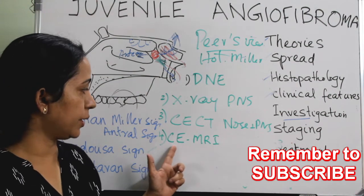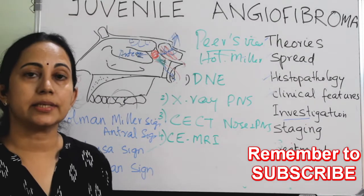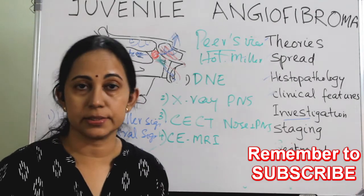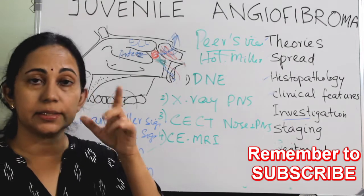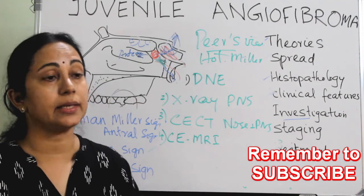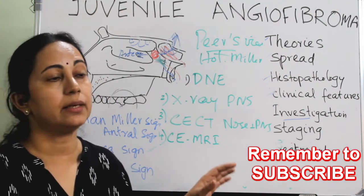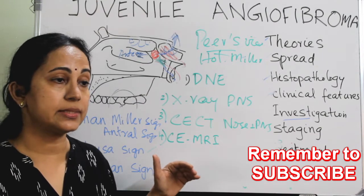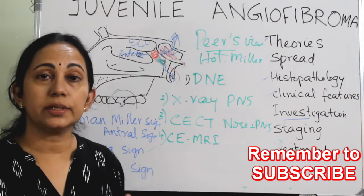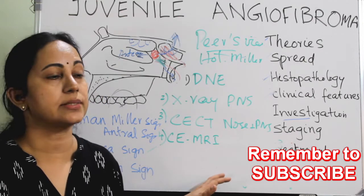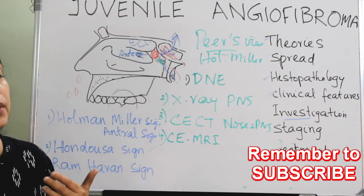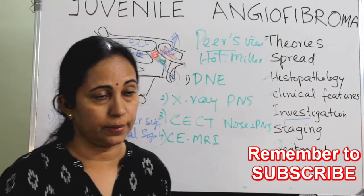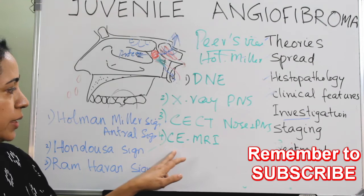Another investigation modality is contrast-enhanced MRI. This is usually done in case of advanced JNA, meaning when there is intraorbital, intracranial, or parapharyngeal extension, to get very good soft tissue delineation. For long-term post-operative surveillance, contrast-enhanced MRI is the investigation of choice because it provides excellent soft tissue delineation without radiation exposure.